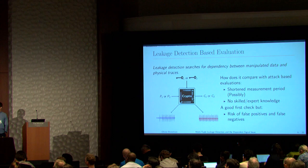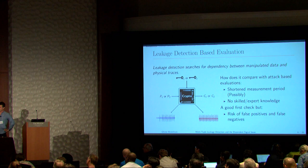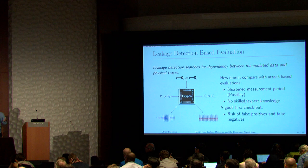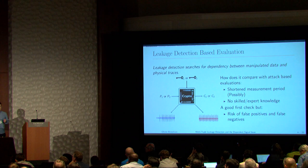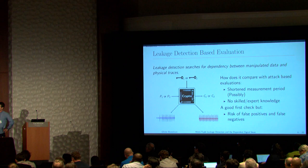However, the drawback of leakage detection is that it's a good first step for security analysis but not the golden standard. There is still a risk of false positives and false negatives. If you cannot find leakage, it's unclear whether you didn't take enough measurements or the device is actually not leaking. These are still open questions.